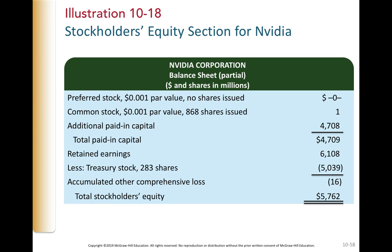They've got preferred stock and common stock with additional paid-in capital to bring the total paid-in capital. Next up, they've got the retained earnings and treasury stock, giving them accumulated other comprehensive loss, and their total stockholders' equity.